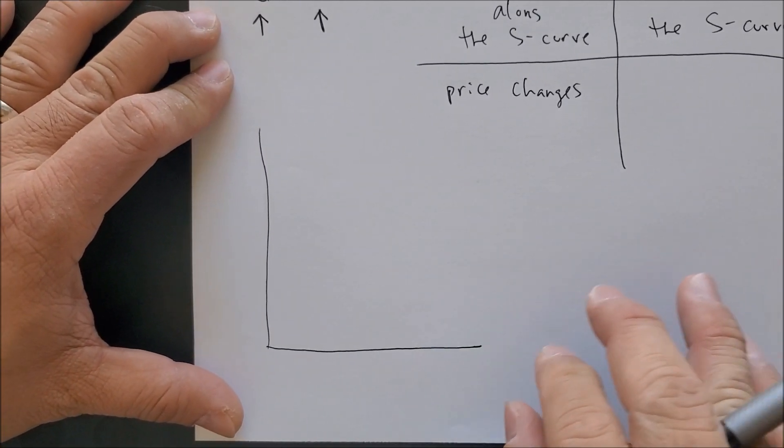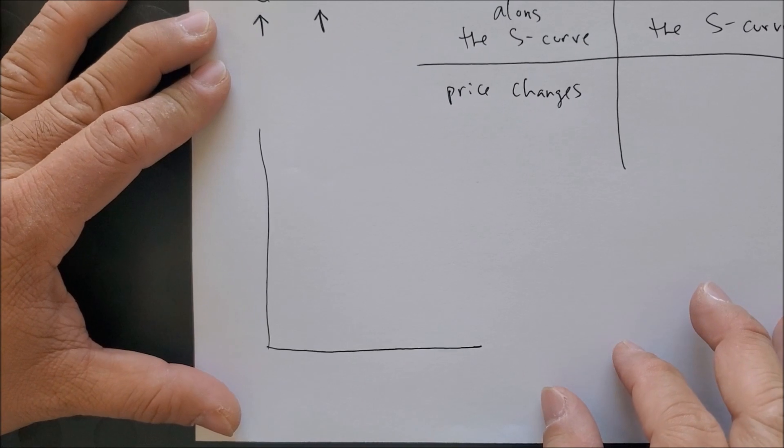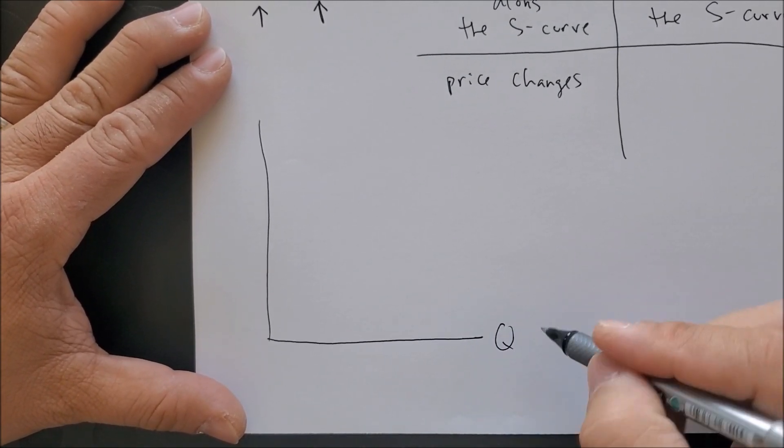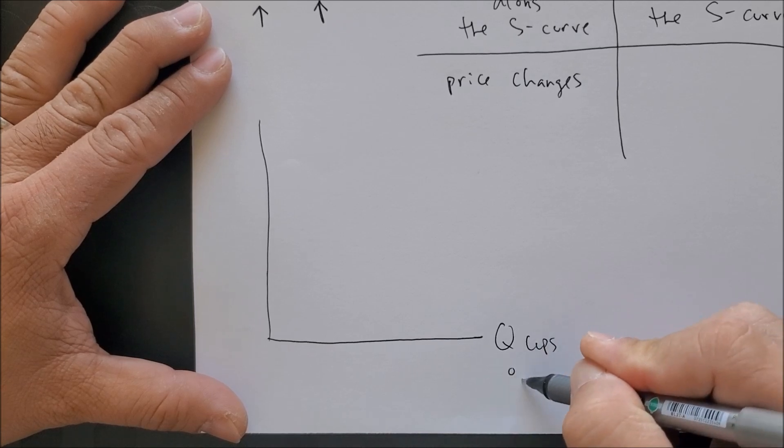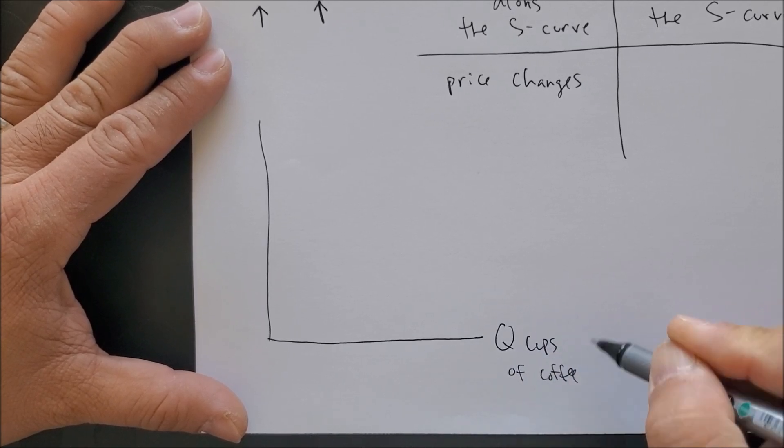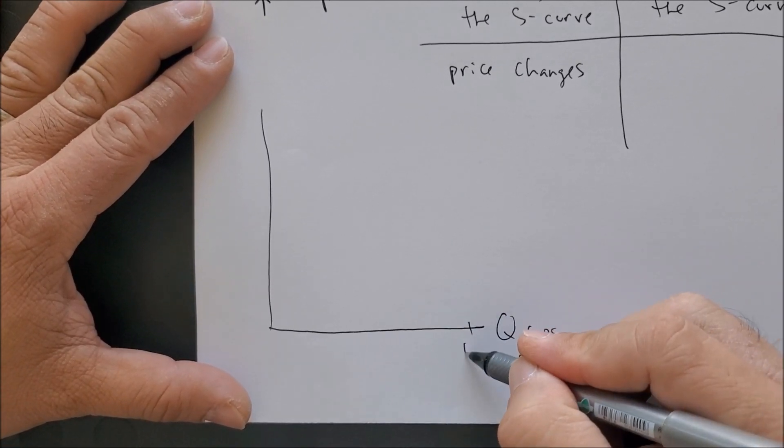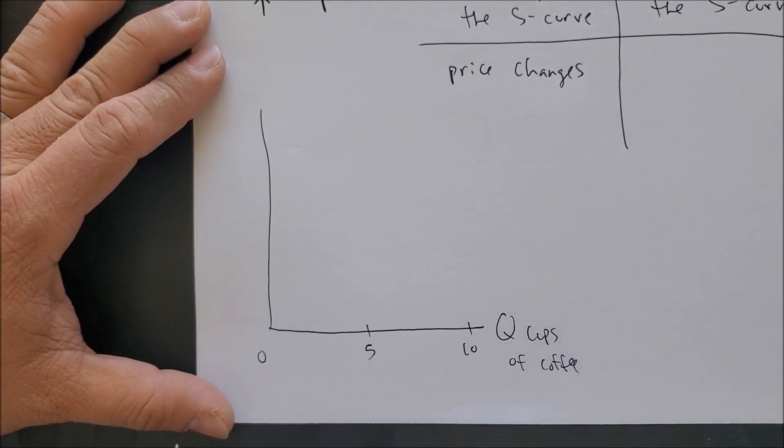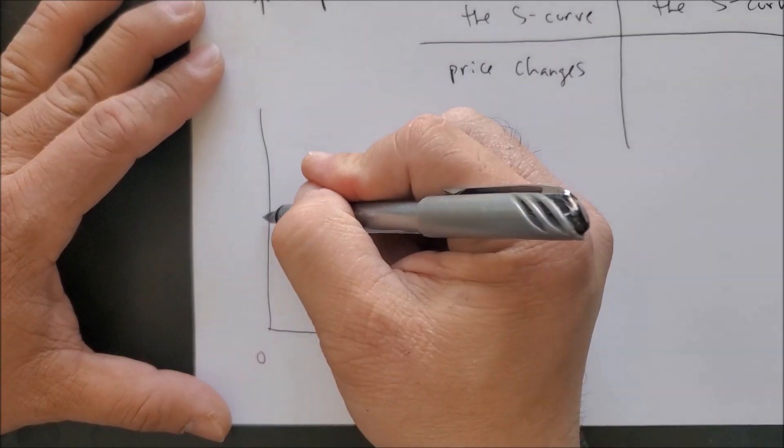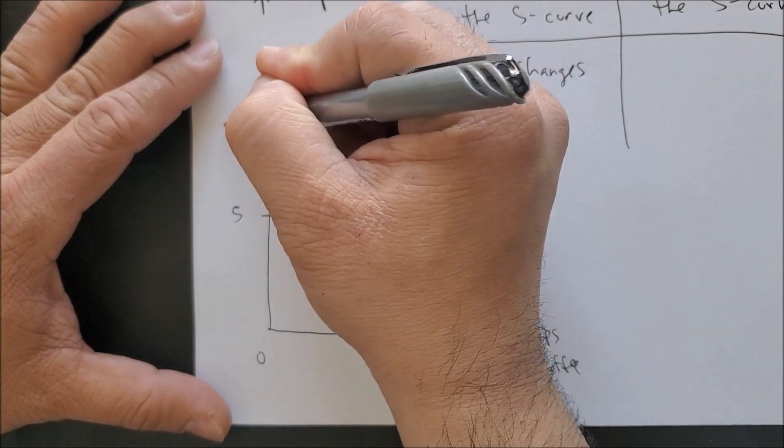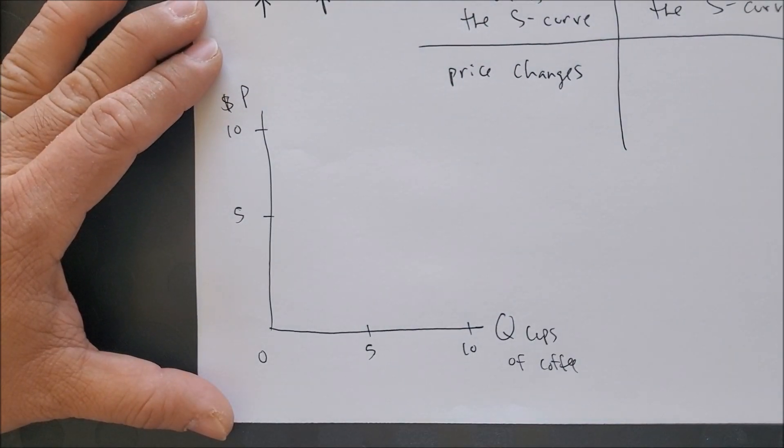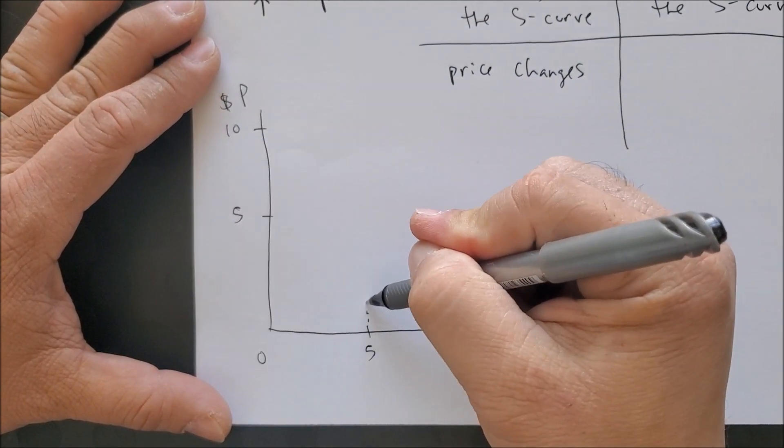Now we can draw our graph to show what happens when there is a price change that affects the quantity supplied. We're looking at the x-axis of quantity - let's use cups of coffee. We're using 10 as a maximum quantity, five cups of coffee, zero at our origin. Five dollars, ten dollars - this is price on the y-axis.